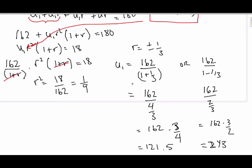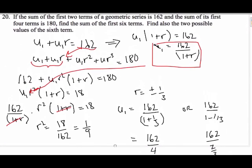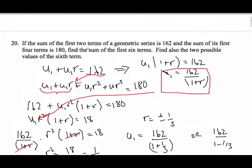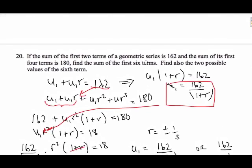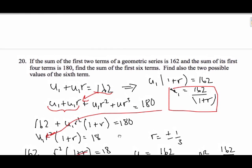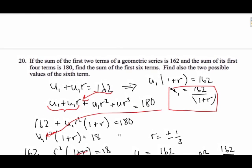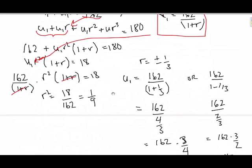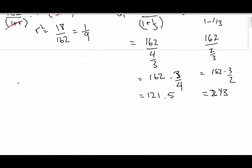So, I have U1 and R. Now, the problem says, if we keep on going here, find the sum of the first six terms. We know the sum for a geometric series, our formula is S sub n is equal to U1, 1 minus R to the nth, all over 1 minus R.